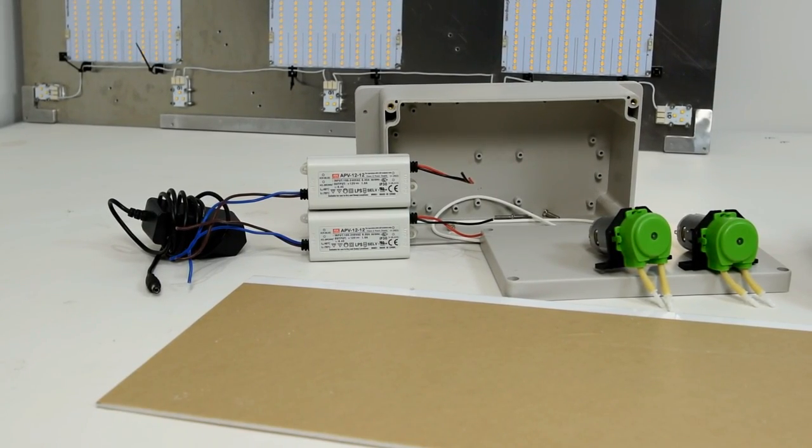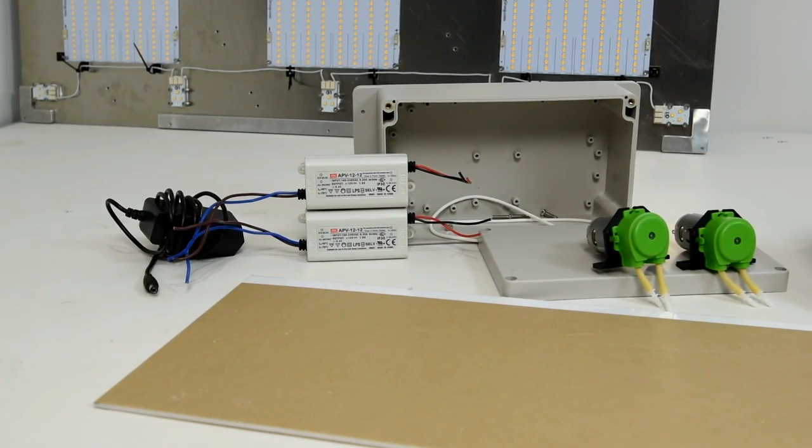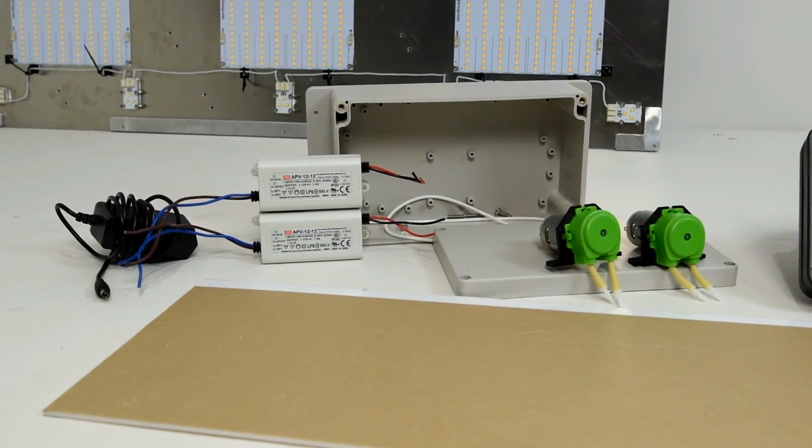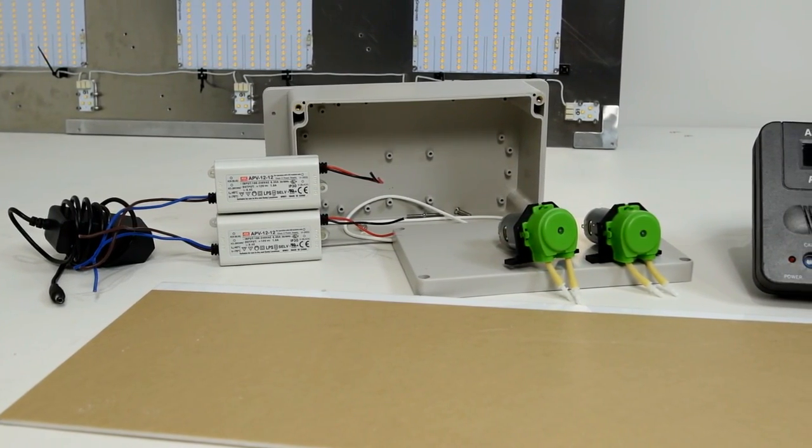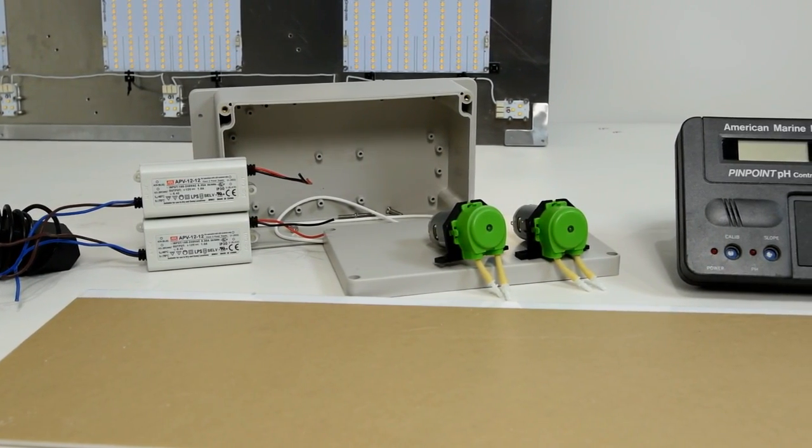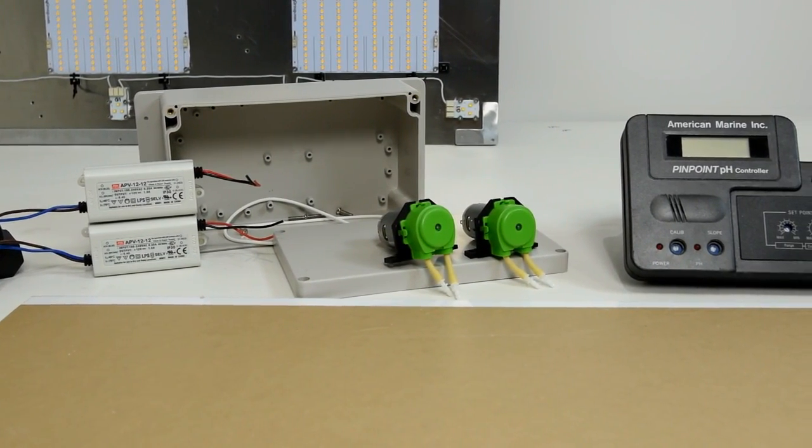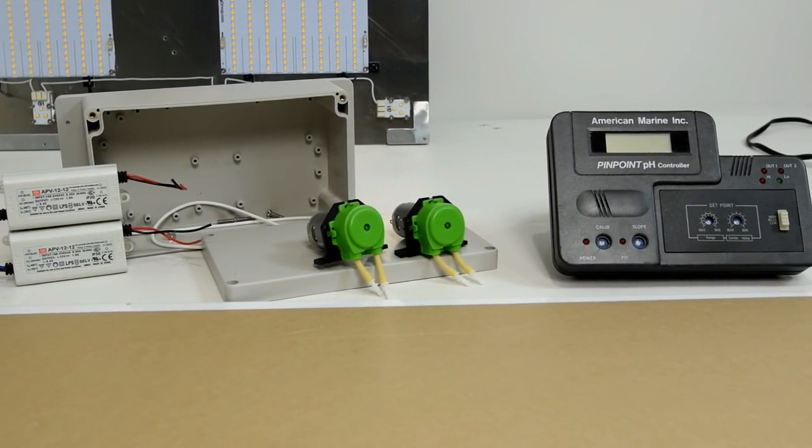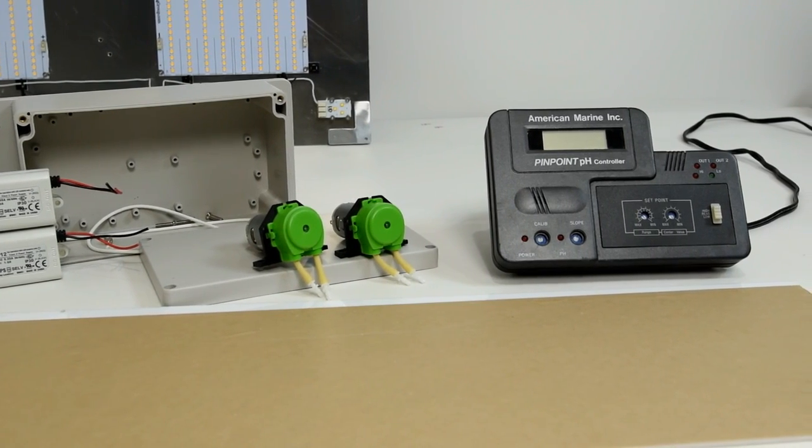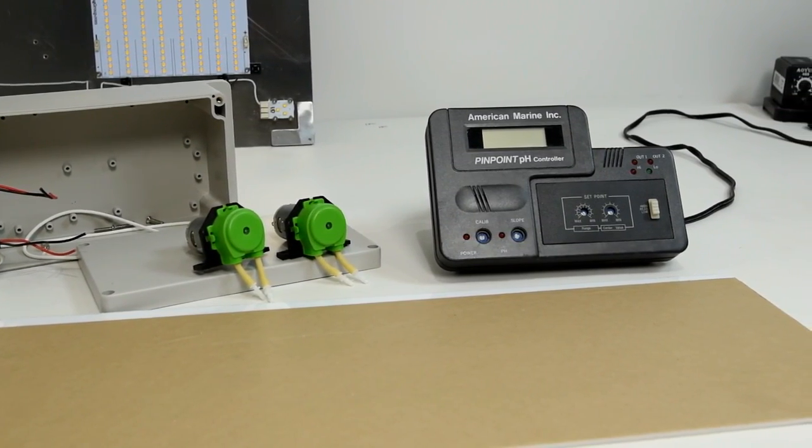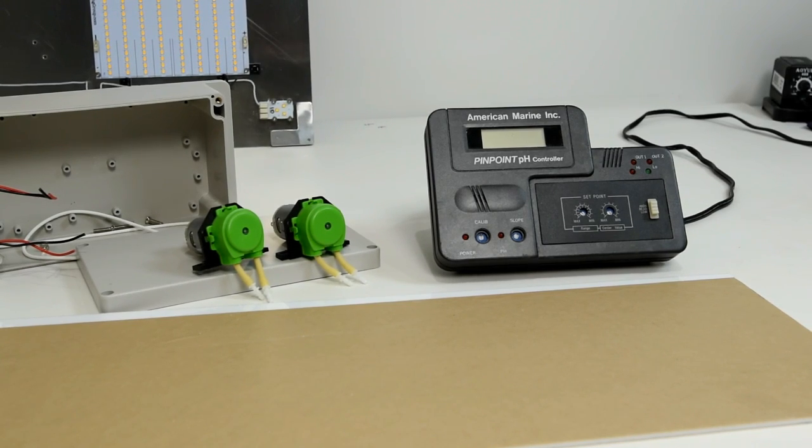Here's what I'm going to use on the build. Most of the stuff you can get from Amazon. I'm using two AC to 12 volt DC transformers or you could use two wall warts. I'm using two peristaltic pumps from Amazon as well as a project box, and I'm using an American Marine Pinpoint pH controller. This is about a $200 controller that I had from a saltwater aquarium from many years ago.